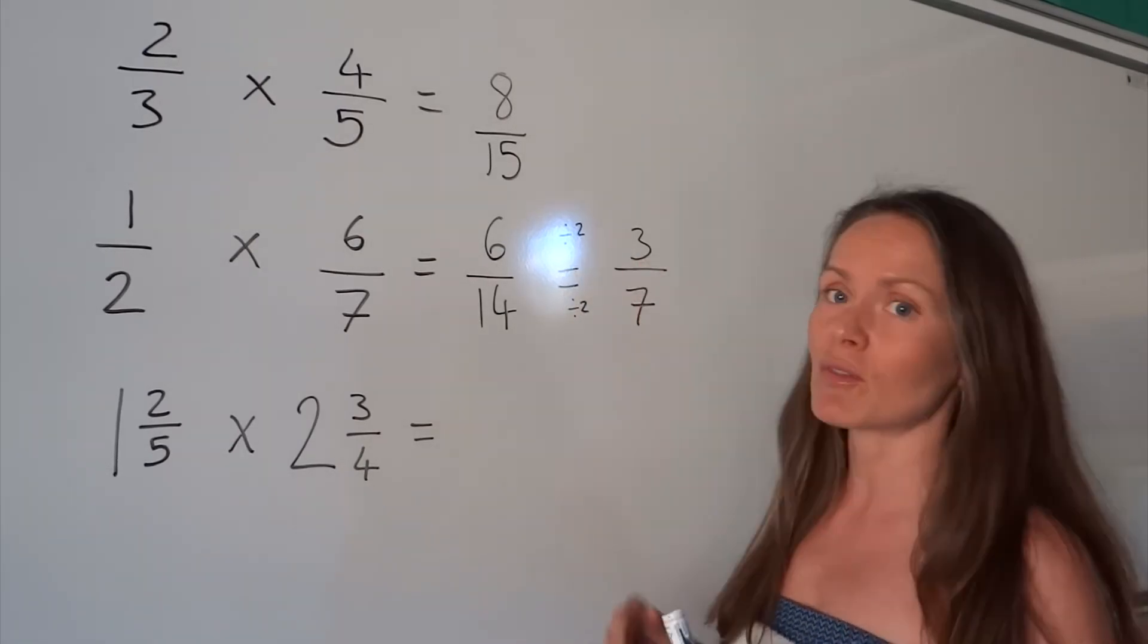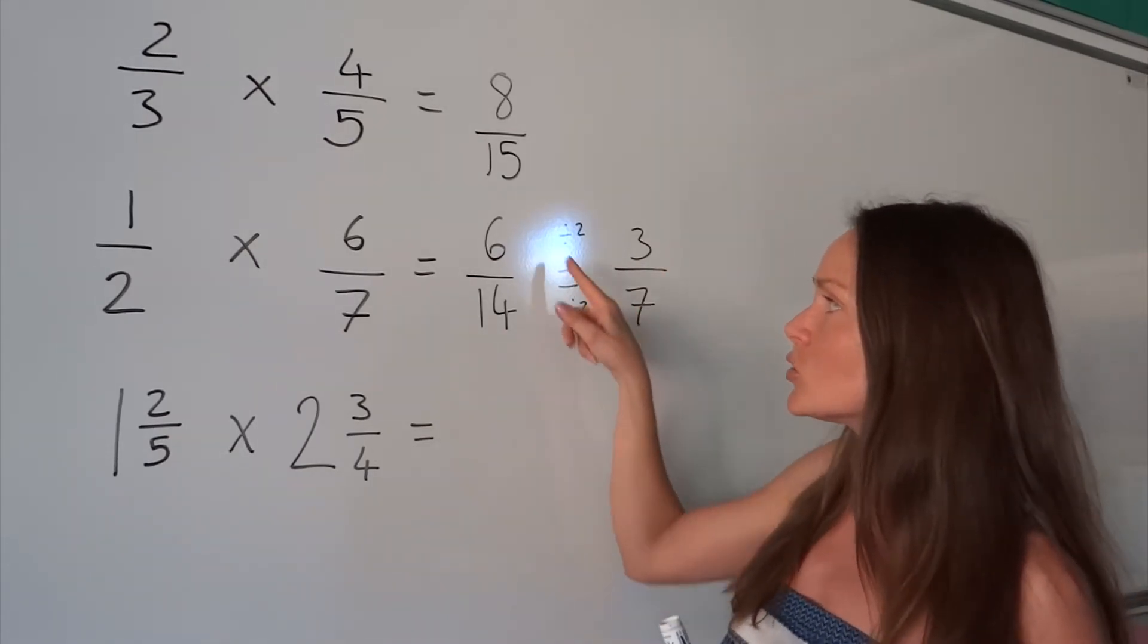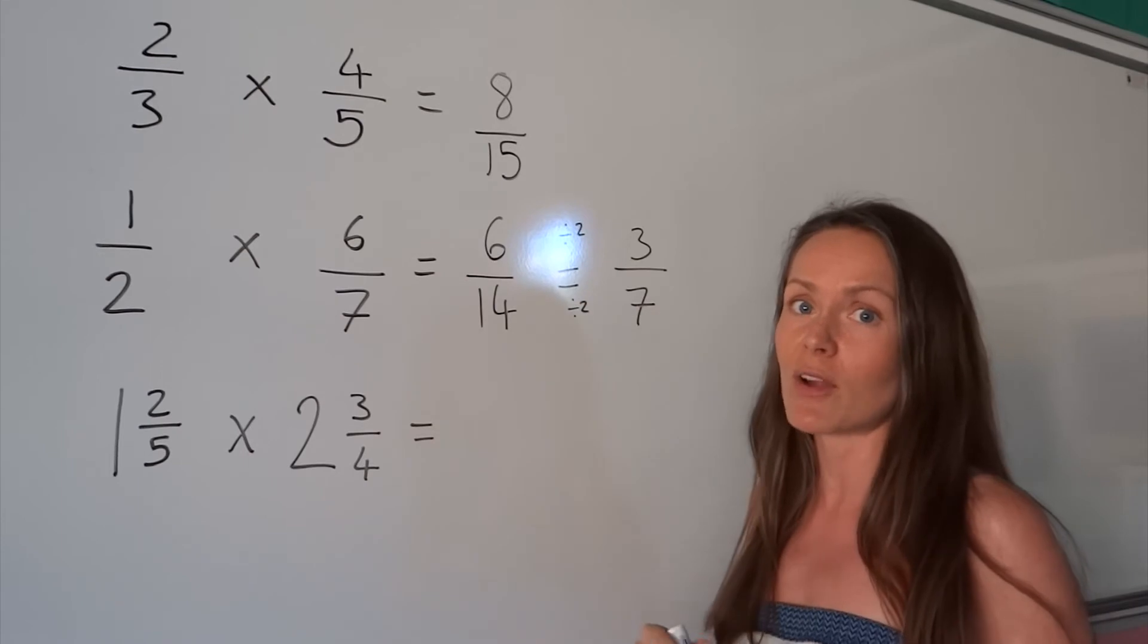Now, it might not be 2 that you're dividing by. It might be 3, 4, 5. It just so happens that 2 is the common factor for this fraction here.